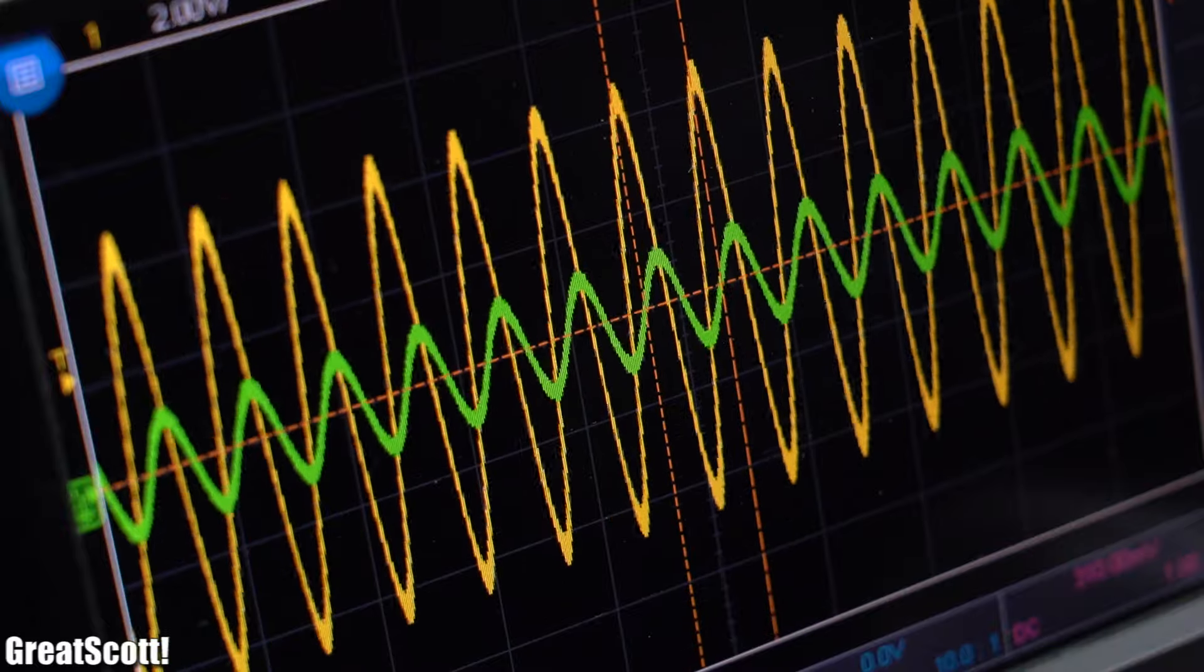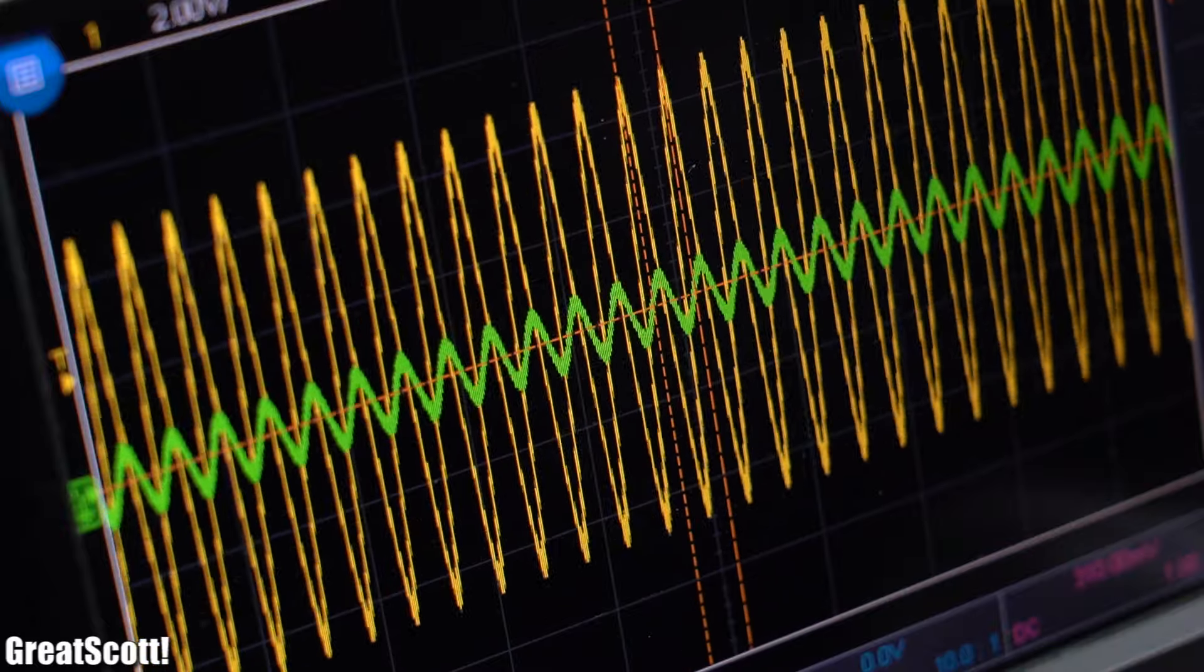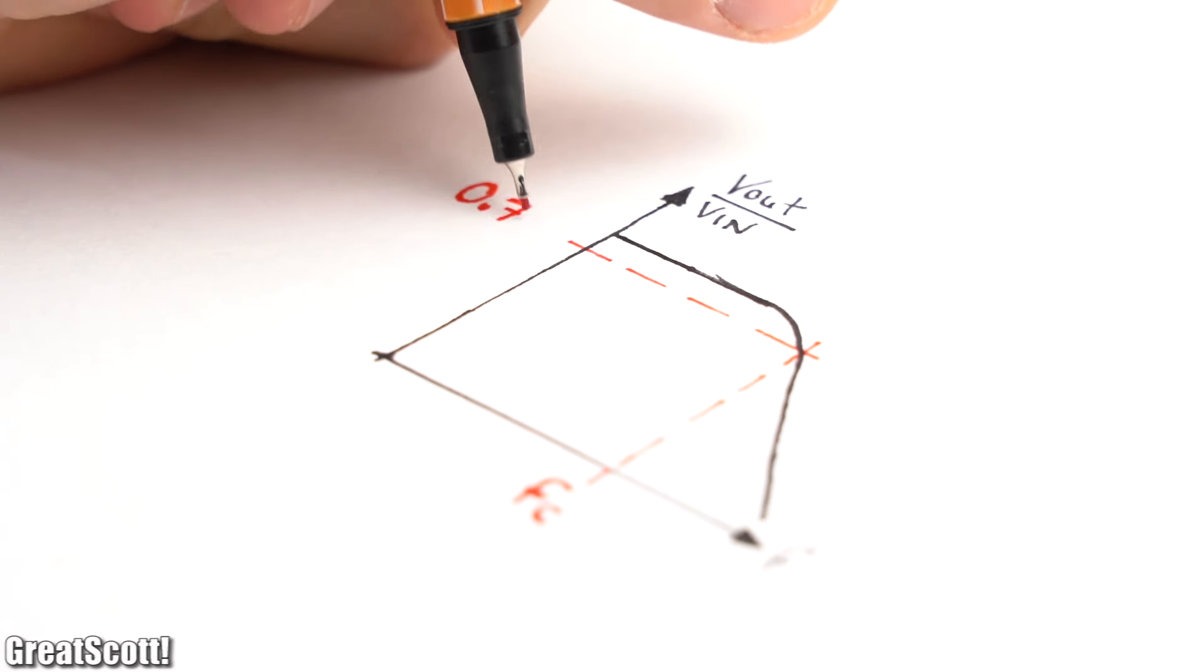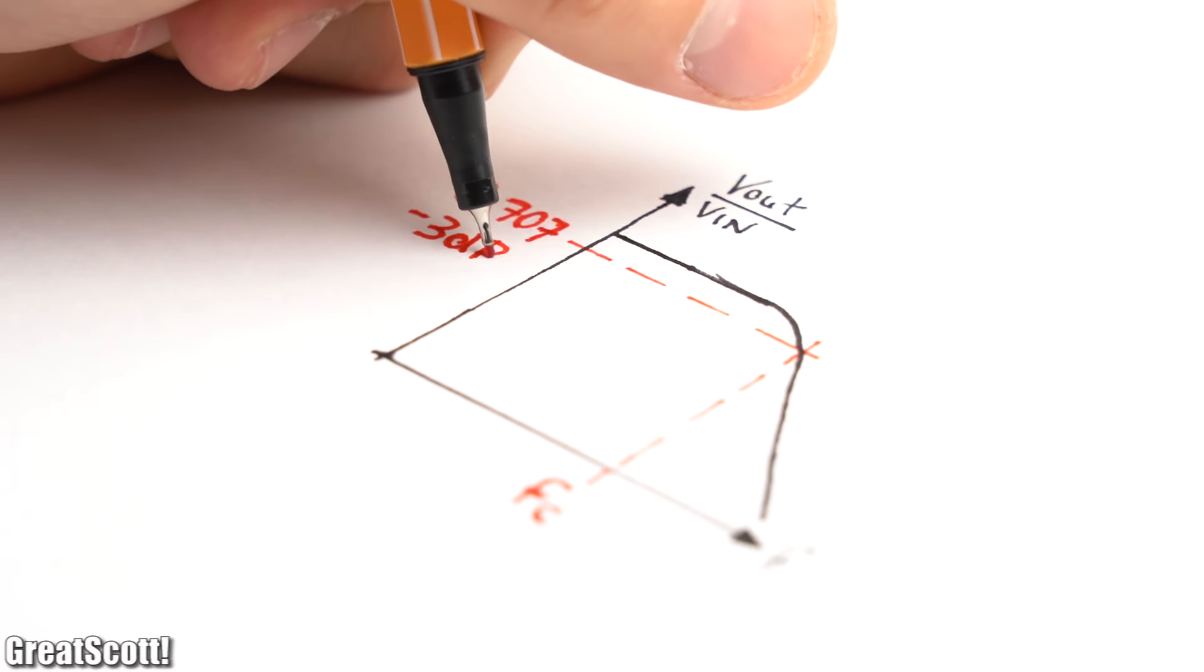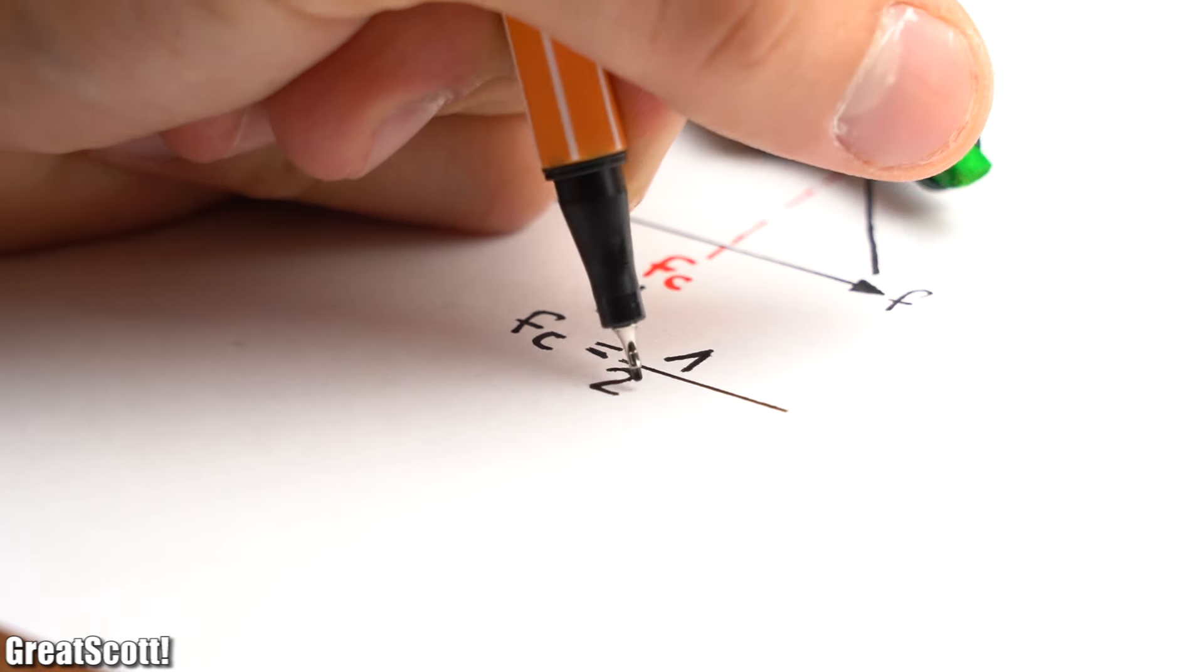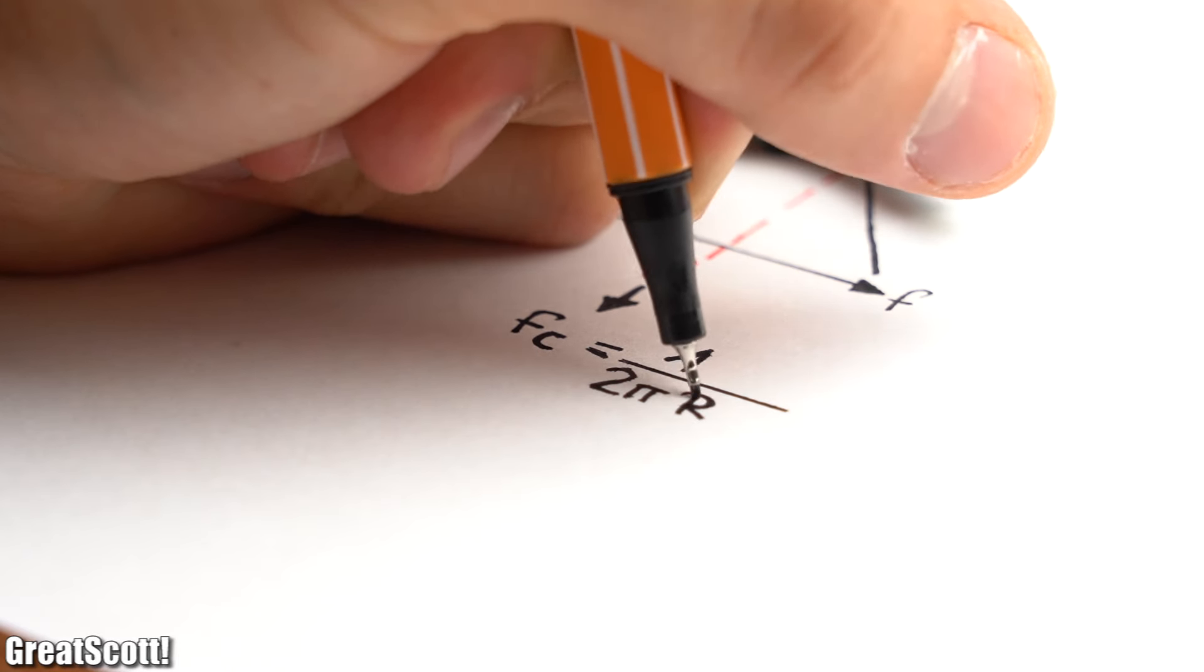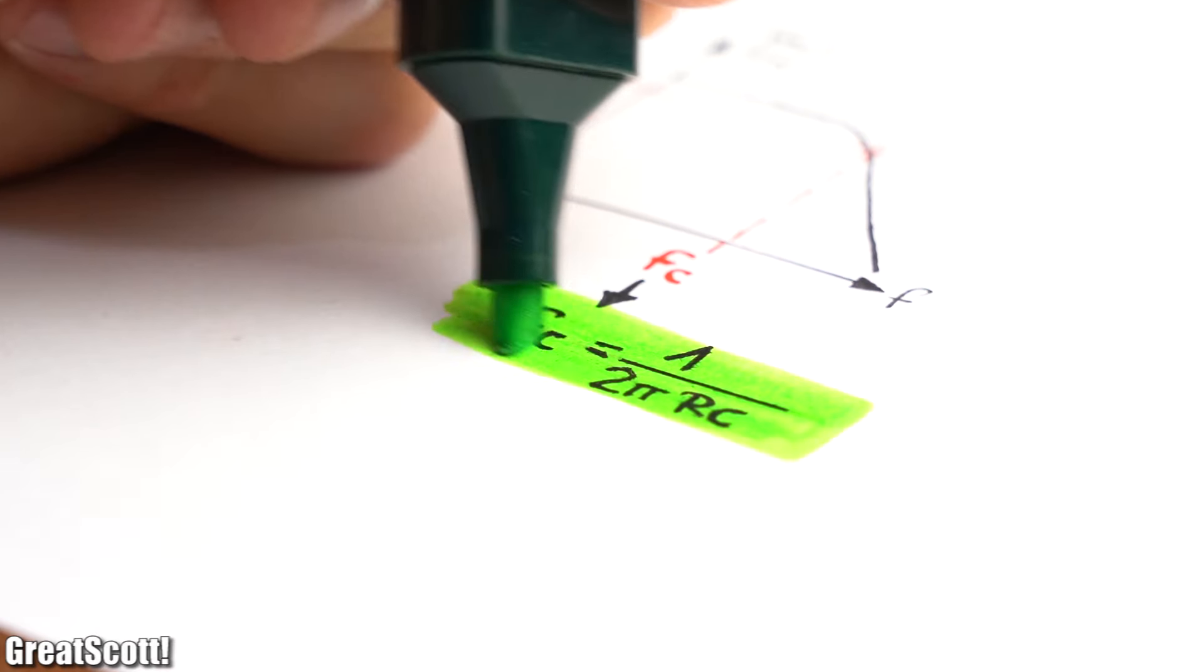Another important value for all filters is the cutoff frequency, which is the frequency where the output voltage is 0.707 times the input voltage, which converted to decibels is a damping of minus 3 dB. The formula for the cutoff frequency for the RC high-pass and low-pass filter is the same and looks like this.